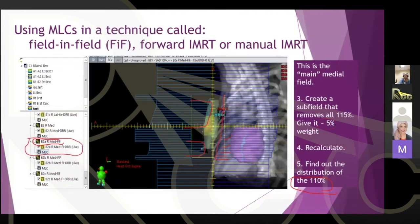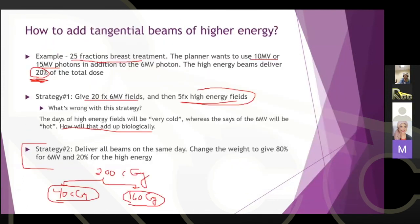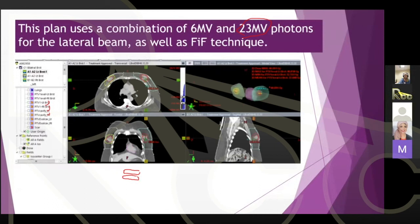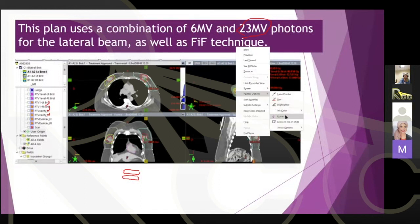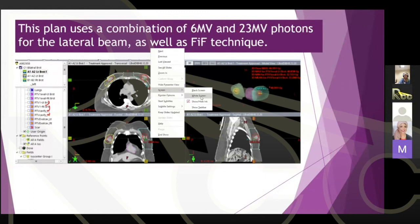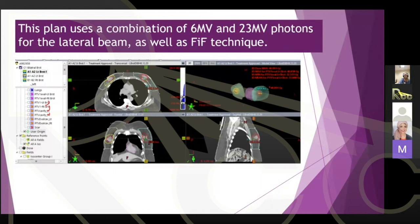Half-beam block can be used in head and neck (upper vs. lower neck), breast with supraclavicular fields, and cranial-spinal irradiation. The technique places the isocenter at the intersection of two adjacent treatment regions — for example, at the junction between the breast and supraclavicular regions. Conventional planning uses a separate isocenter for the breast (in the middle of the breast) and another for the supraclavicular region, whereas half-beam block combines them at the junction.